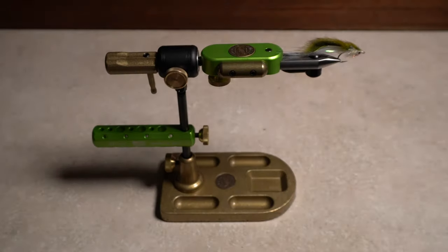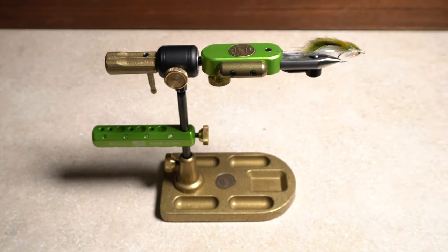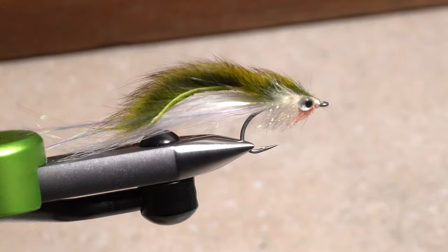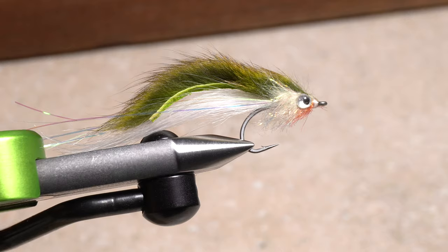With fly tying, there's a second component to seeing what you're doing aside from vision correction, and that's light. Without it, you simply can't see, and as we know, you have to see well to tie well. Fortunately, in recent years...